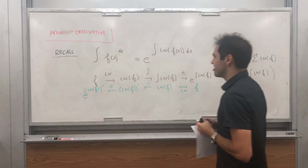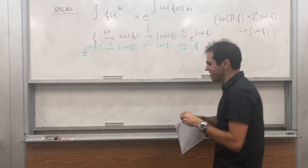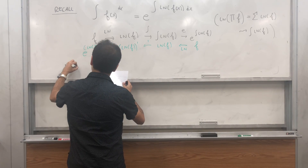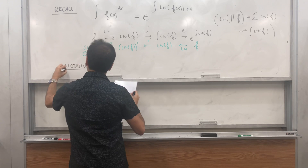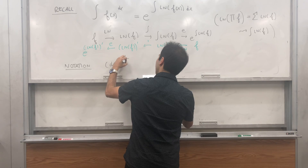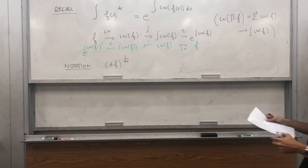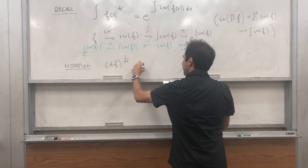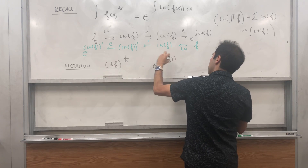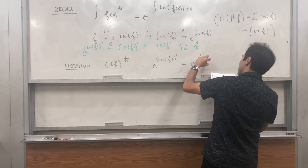So this is the product derivative. How do I write this? I found a cool notation: not df over dx, but df to the 1 over dx. By what I just said, that should be e of (ln f)', and by the chain rule we get e of f' over f.